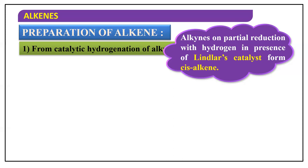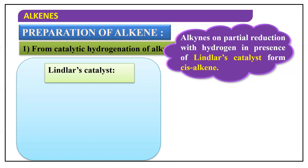If alkynes are completely saturated with hydrogens we get the corresponding alkanes. But here we need to get an alkene, so we should not carry out complete hydrogenation. We must carry out only partial reduction of the alkyne to get an alkene as the product. For carrying out partial reduction, the catalyst used is called Lindlar's catalyst — very important for both your PU exam and competitive exams.